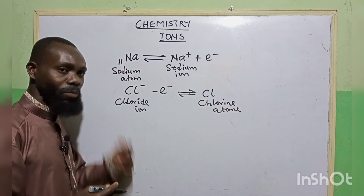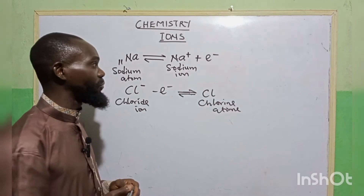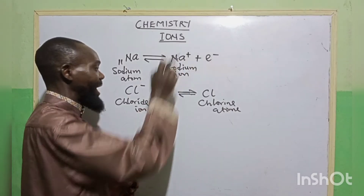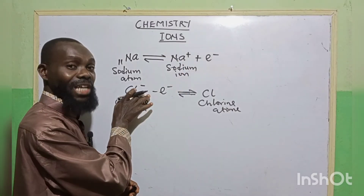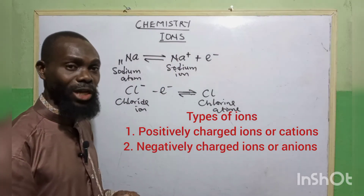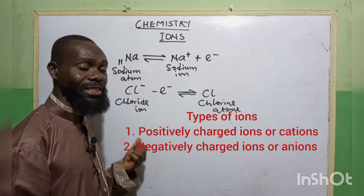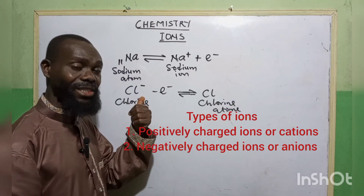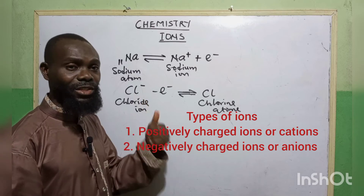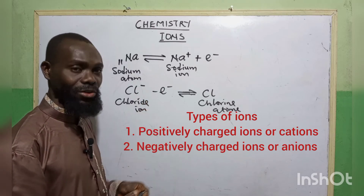From this, you can now see that there are two types of ions: the positively charged ions and the negatively charged ions. The positively charged ions are otherwise known as cations, while negatively charged ions are otherwise known as anions.